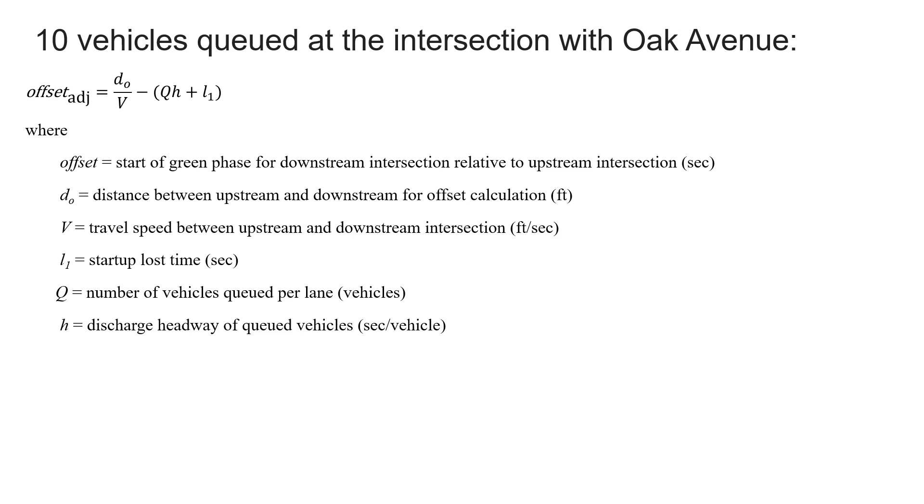This is our third scenario. We've got 10 vehicles queued at Oak Avenue, and since we have these vehicles already at Oak Avenue, we need to clear those before we release the vehicles from that upstream intersection at Pine.